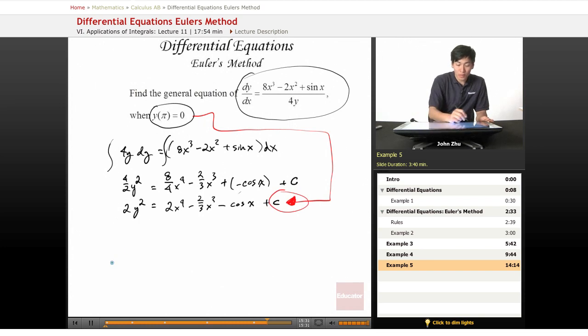Let's just go ahead and plug it in. 2 times 0 squared equals 2 times pi to the fourth minus 2 thirds pi squared minus cosine of pi. And this just equals 0, so 0.